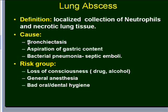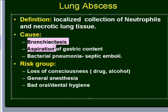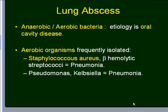Key risk group to remember: bad oral or dental hygiene. Regarding causes, bronchiectasis is an important cause of lung abscess. As for agents, we can see a mixture of anaerobic and aerobic bacteria. If we see this kind of mixture, the most likely etiology is that the infection is coming from the oral cavity, since the oral cavity can harbor many different types of organisms.